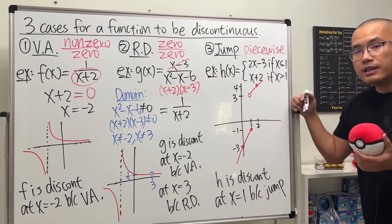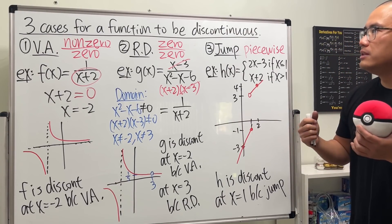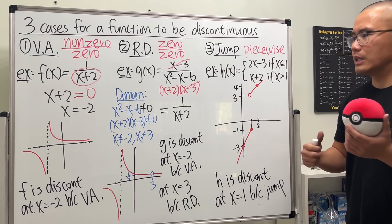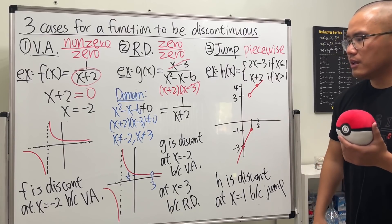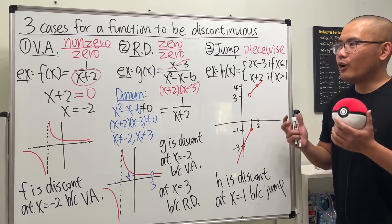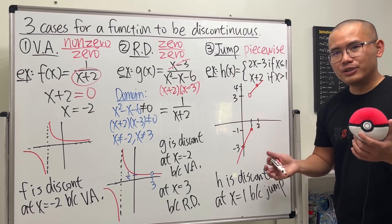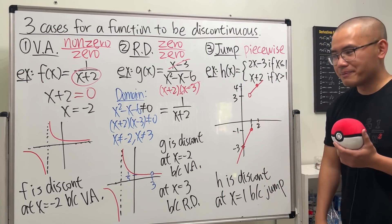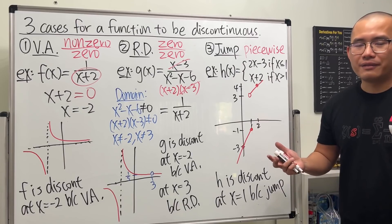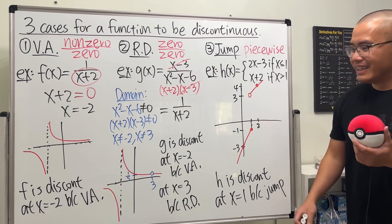So this covers all three cases for a function to be discontinuous: vertical asymptote (VA), removable discontinuity (RD), and jump. These are the most common cases; there are special cases with other types of functions that I can cover in another video. Hopefully this clears up the VA, RD, and jump for those of you just starting calculus one. Let me know how the class is going and if there's anything else you'd like to know.